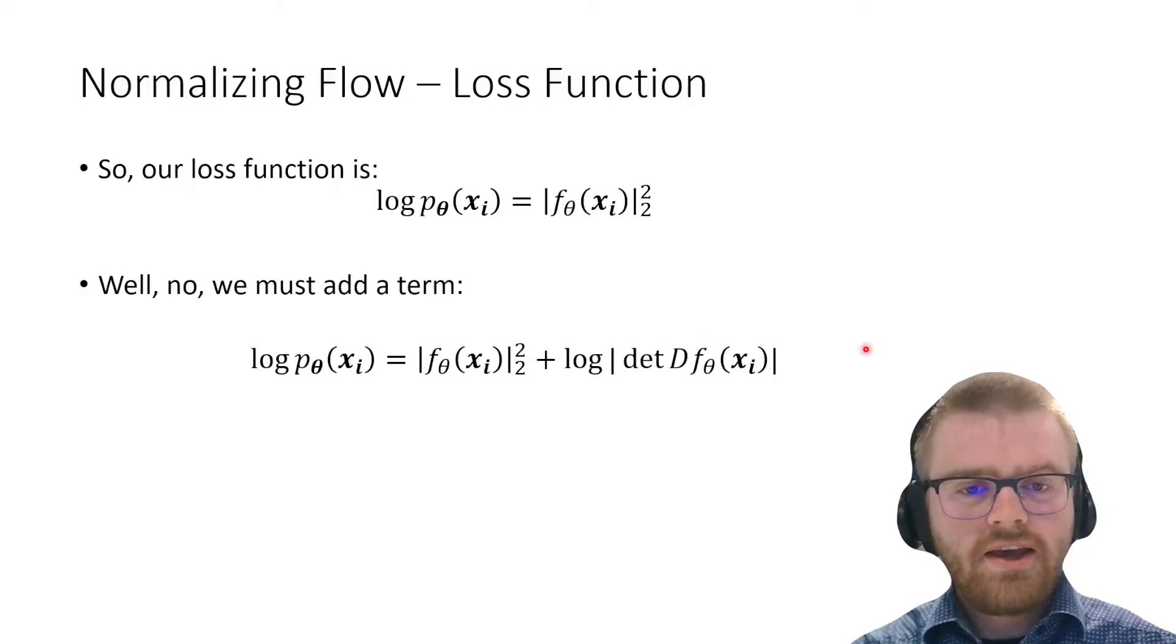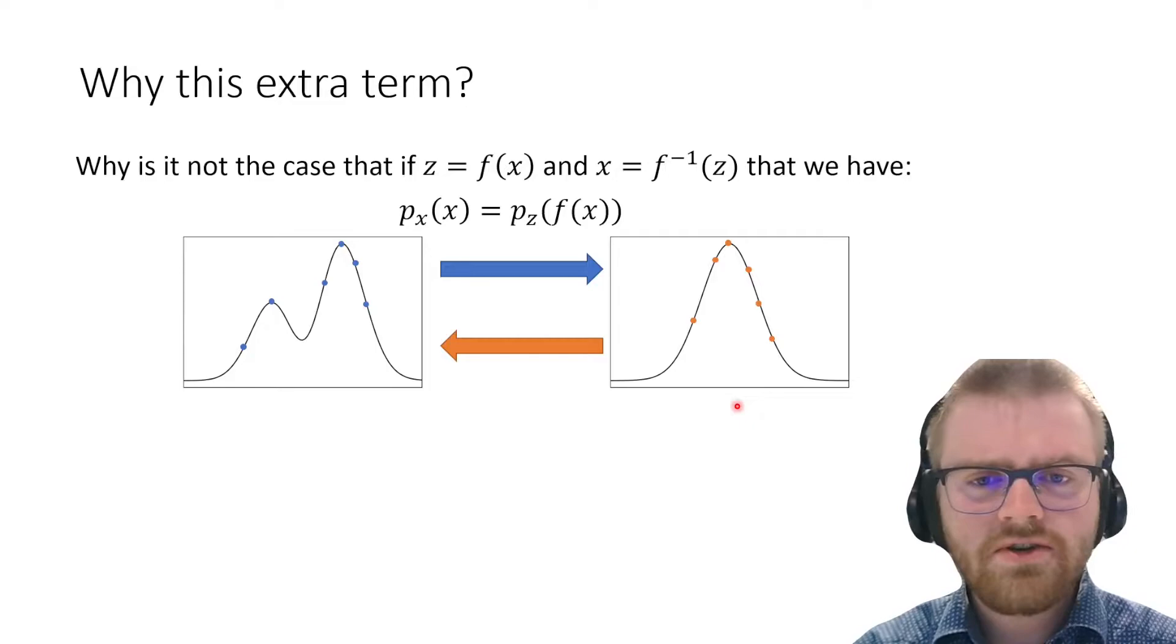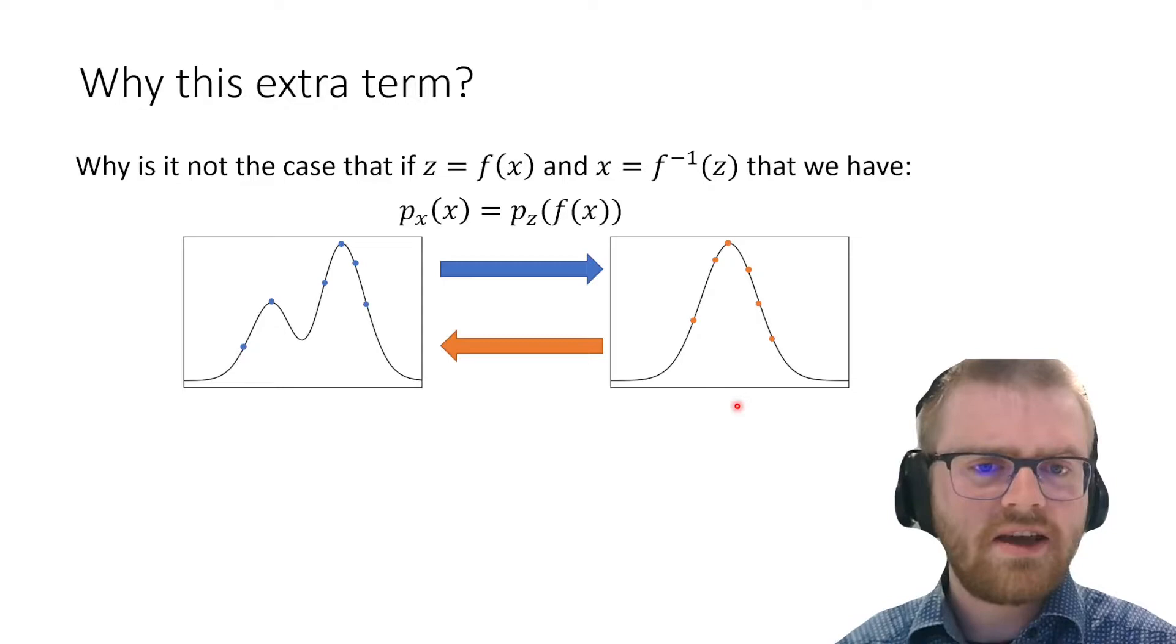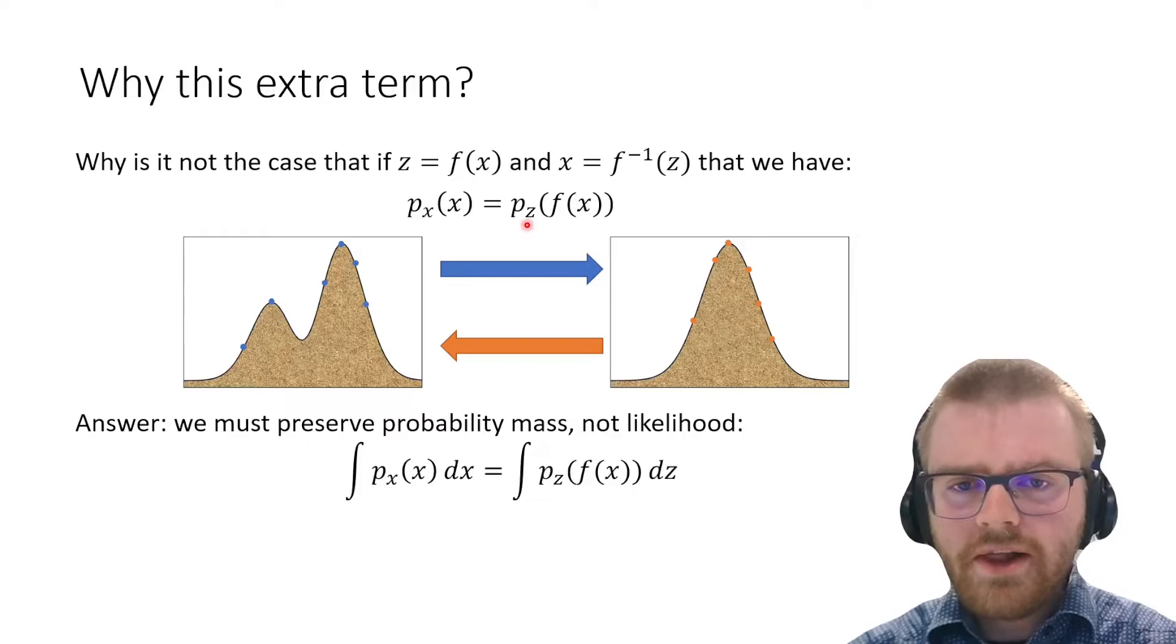We're adding a term: the log determinant of the Jacobian. This D is the Jacobian of the function. Why this extra term? We have a bijective function where z is f(x) and x is f^(-1)(z). Why don't we have that the probability in x space is the same as the probability in z space?